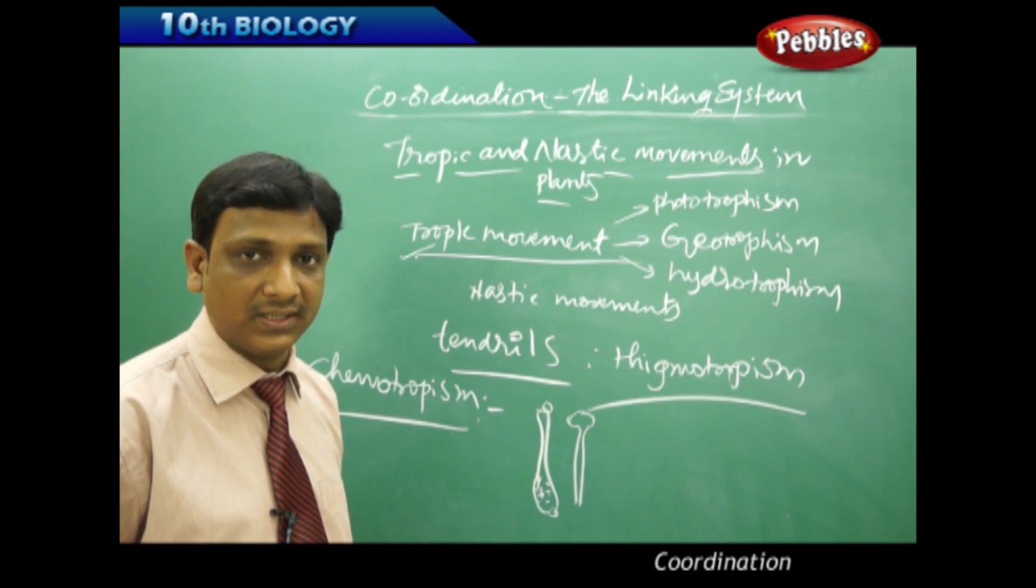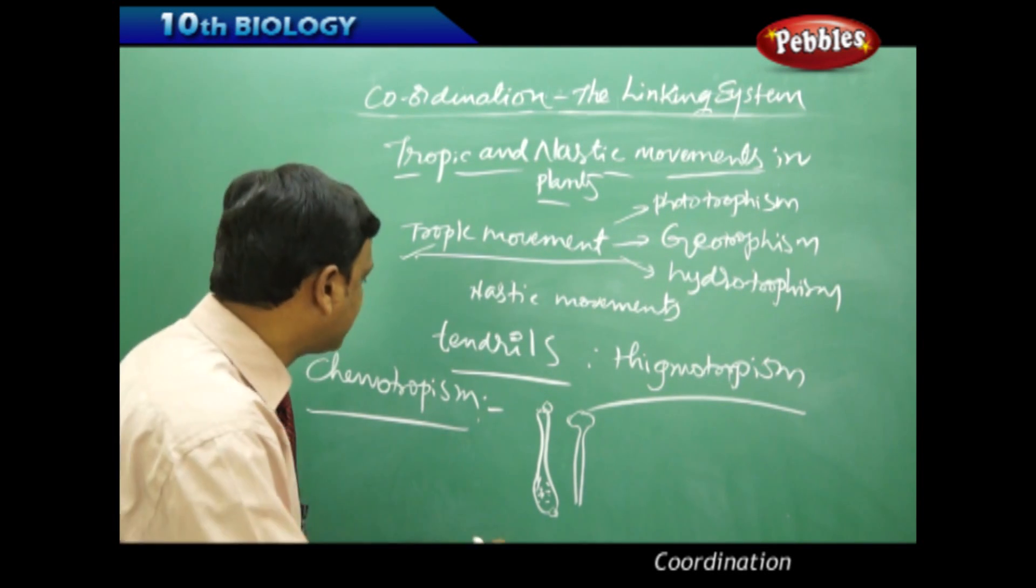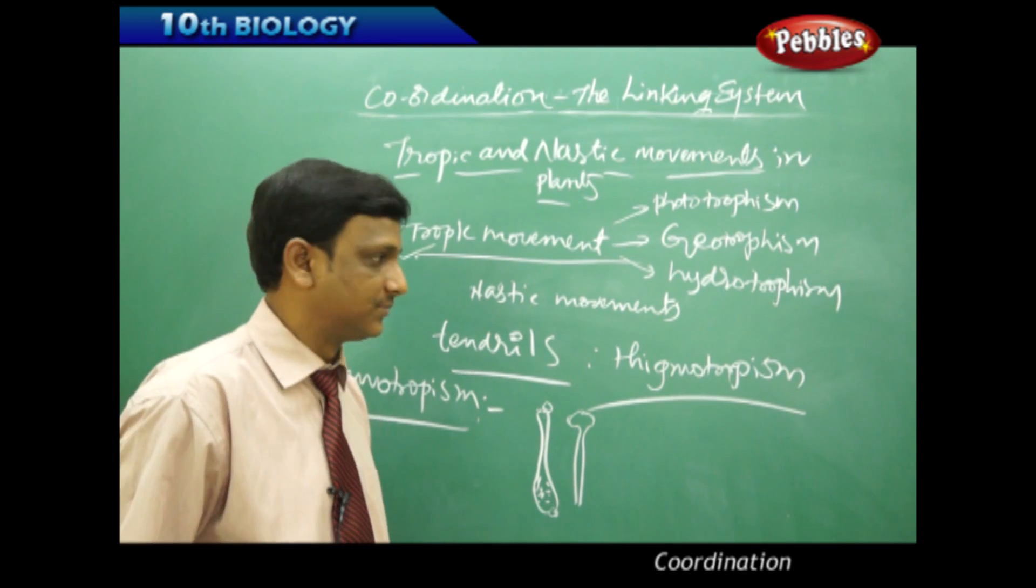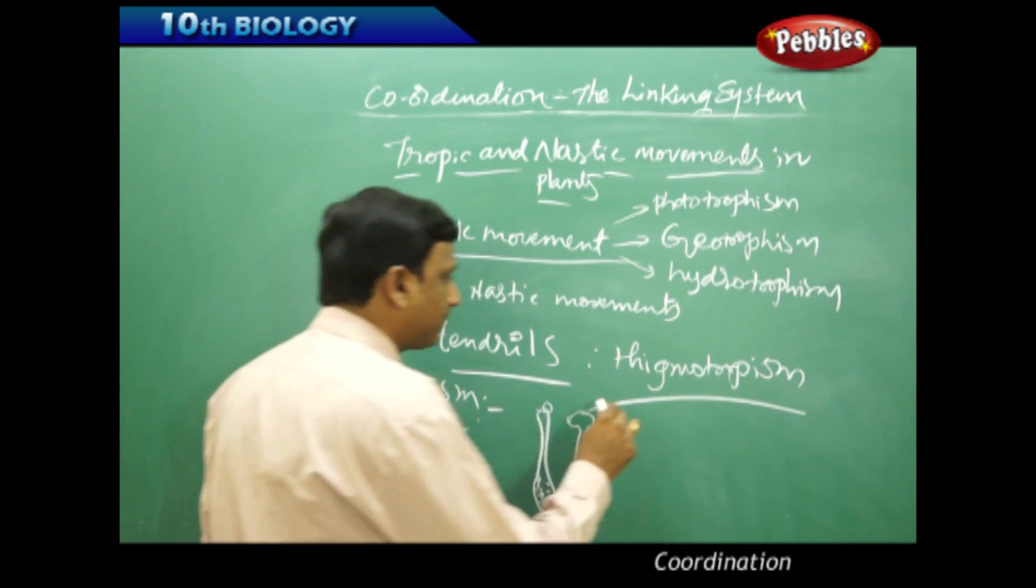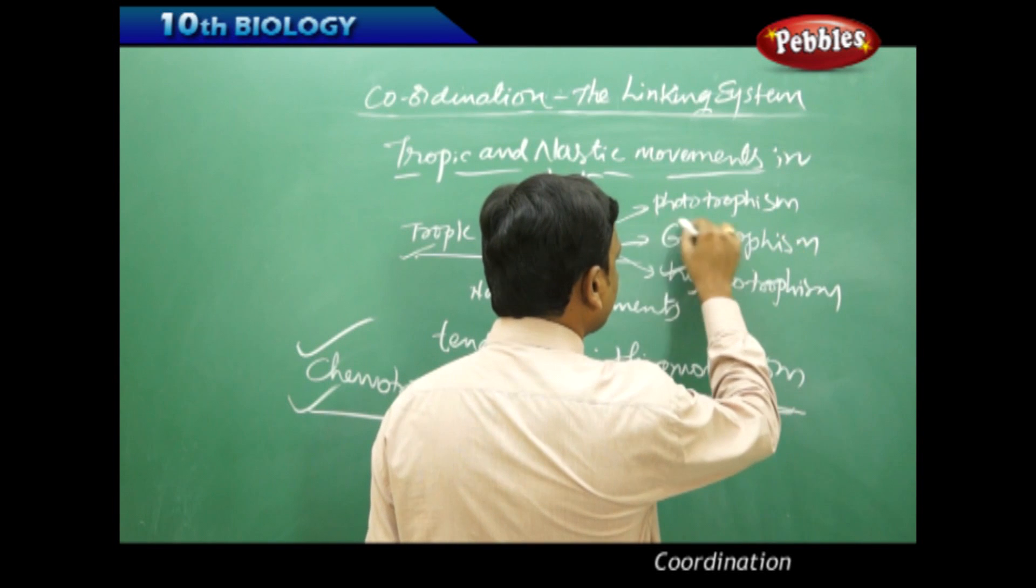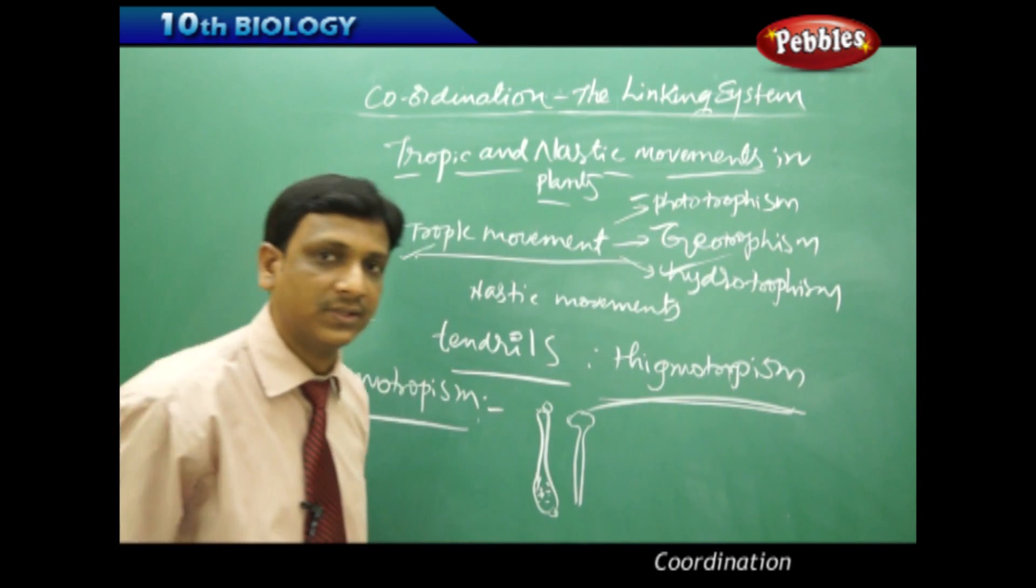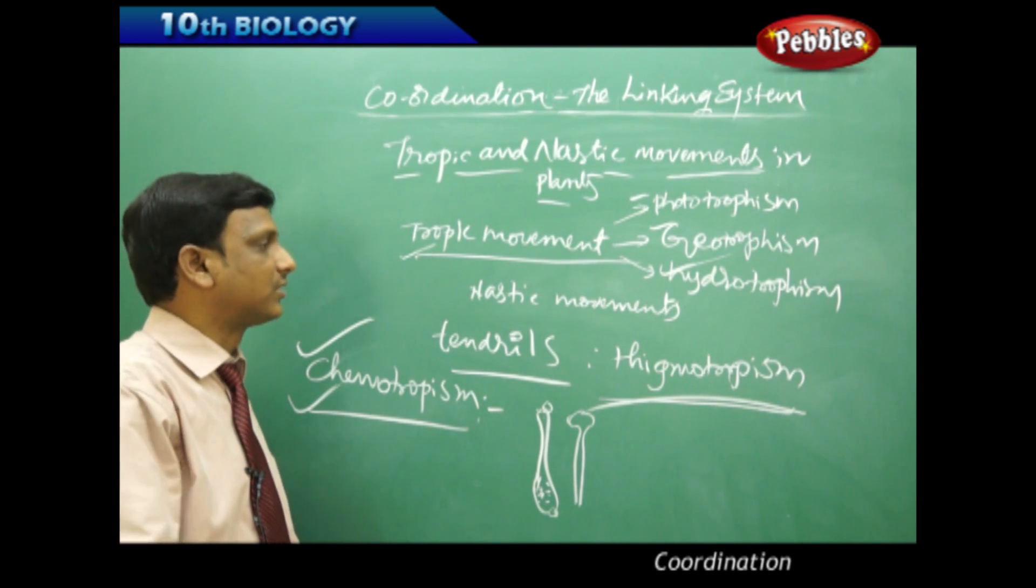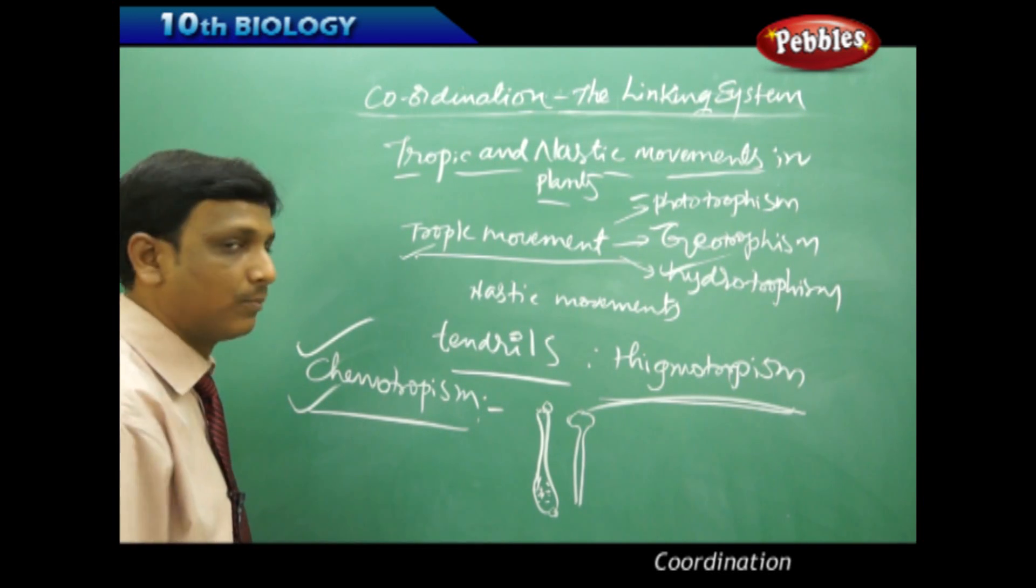This is because of the chemical stimulus. We call this kind of response Chemotropism. So in plants, we observe Chemotropism, Thigmotropism, Hydrotropism, Geotropism, and Phototropism. These are the various kinds of tropic movements observed in plants, which are coordinated by plant hormones.